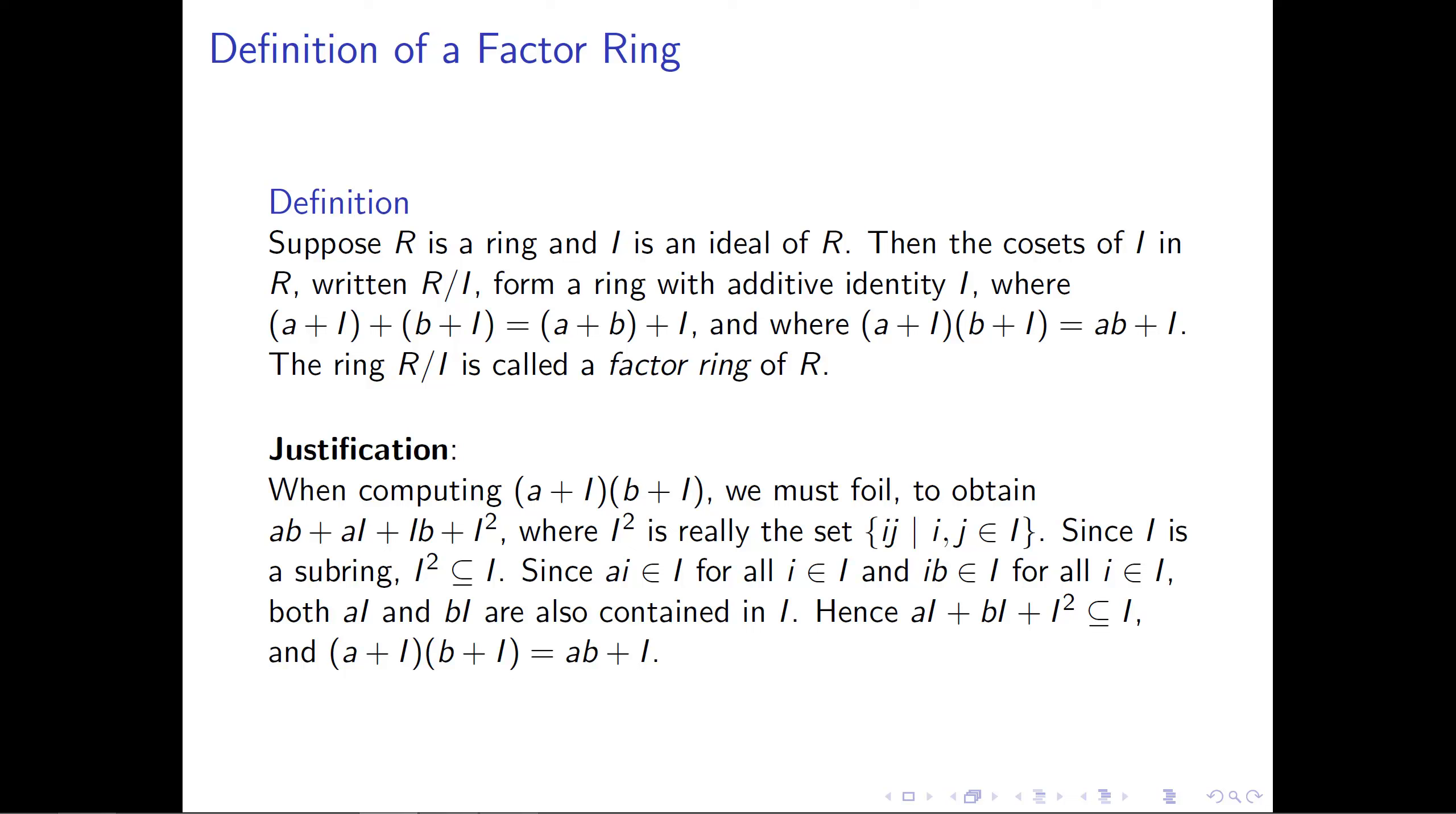A word of caution is advised about I². I² is not the set of things of the form i² where i belongs to I, but it's rather the set i times j where i and j belong to I. So the i and j can be different. We're looking at all possible products, not just squares of individual elements.